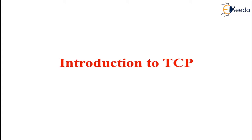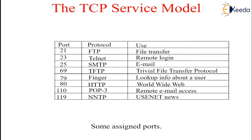In short, TCP must furnish the reliability that most users want and that IP does not provide. This TCP service is obtained by both the sender and receiver creating endpoints called sockets. A socket has a socket number, that is an address consisting of the IP address of the host and a 16-bit number called a port number. A port is the TCP name for a transport service access point. For TCP service to be obtained, a connection must be explicitly established between a socket on the sending machine and a socket on the receiving machine.